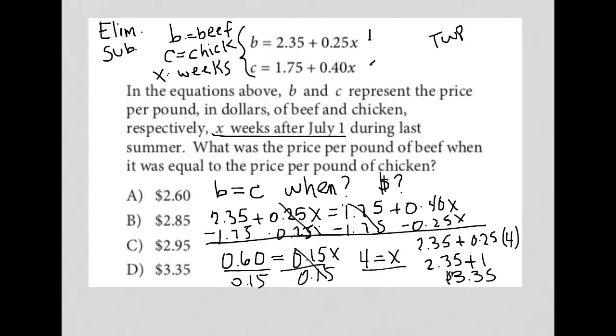So it was $3.35 at the point at which beef and chicken were equal to each other, which is choice D.